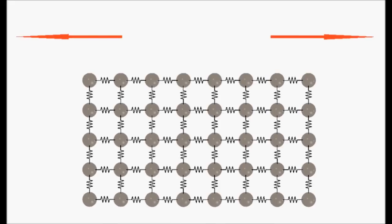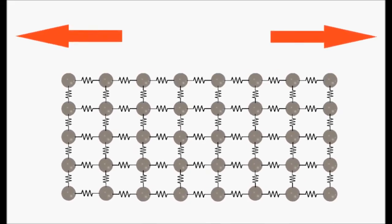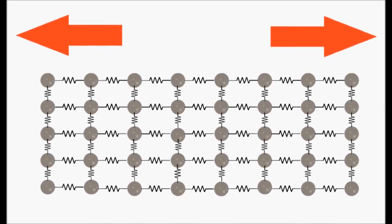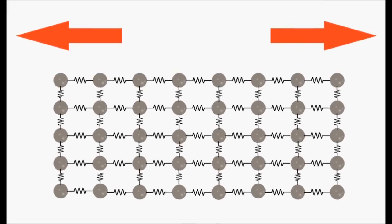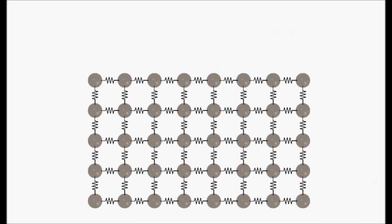If we apply tension on this structure it will deform, but at low loads it will be an elastic deformation. The atom's bonding stretches a little and when the tension is removed, it gets back to the original position.